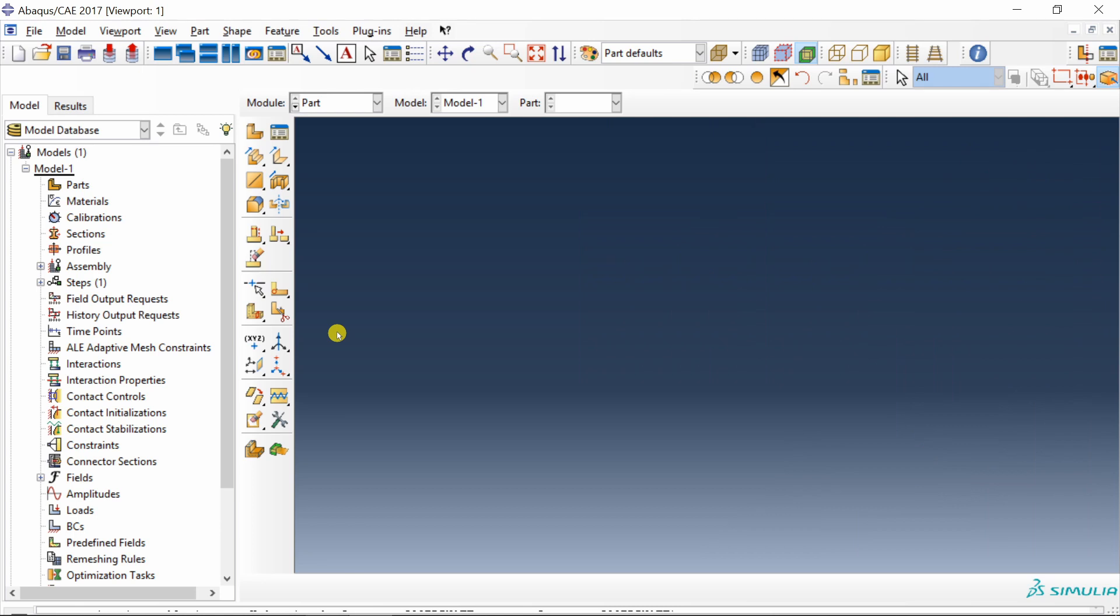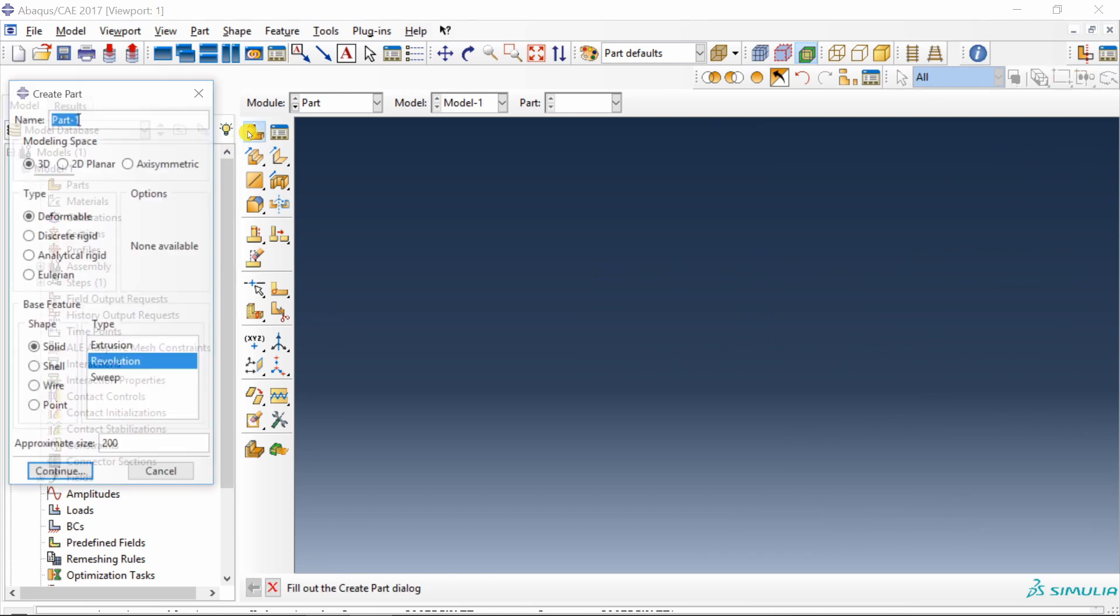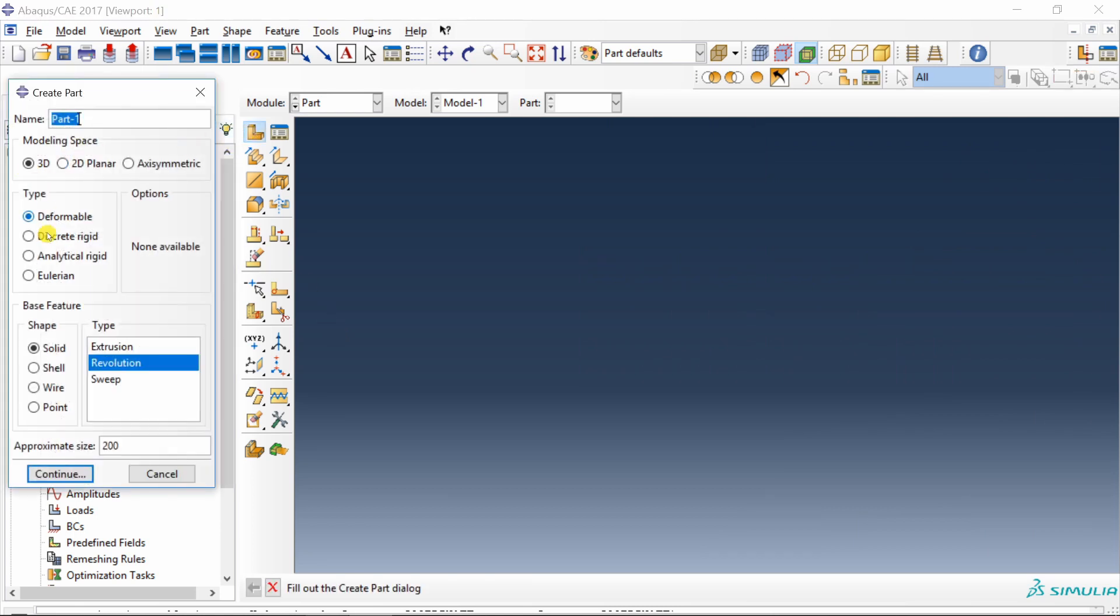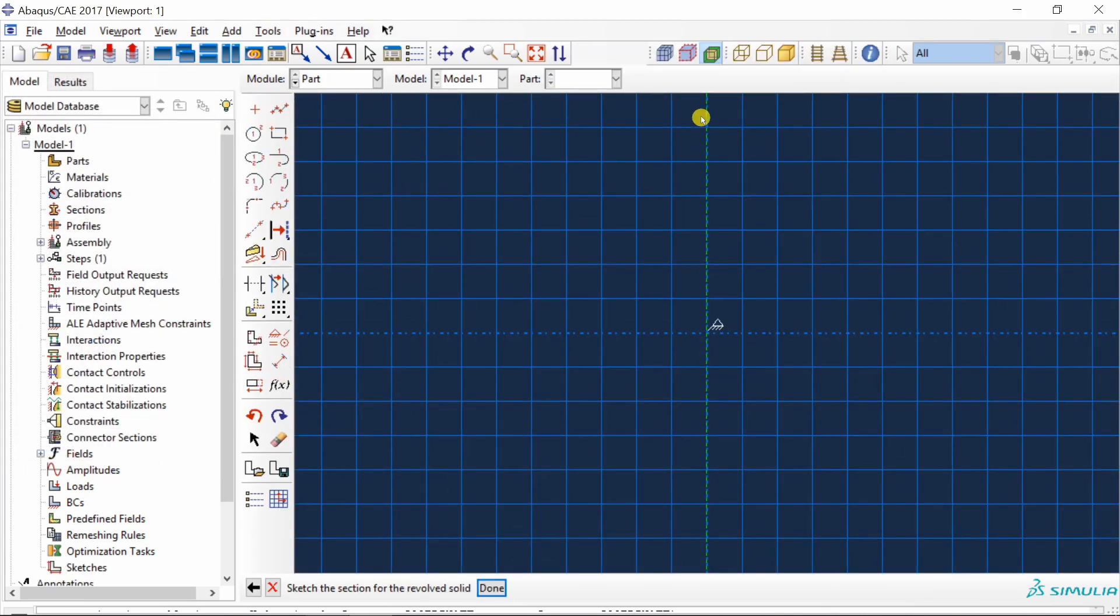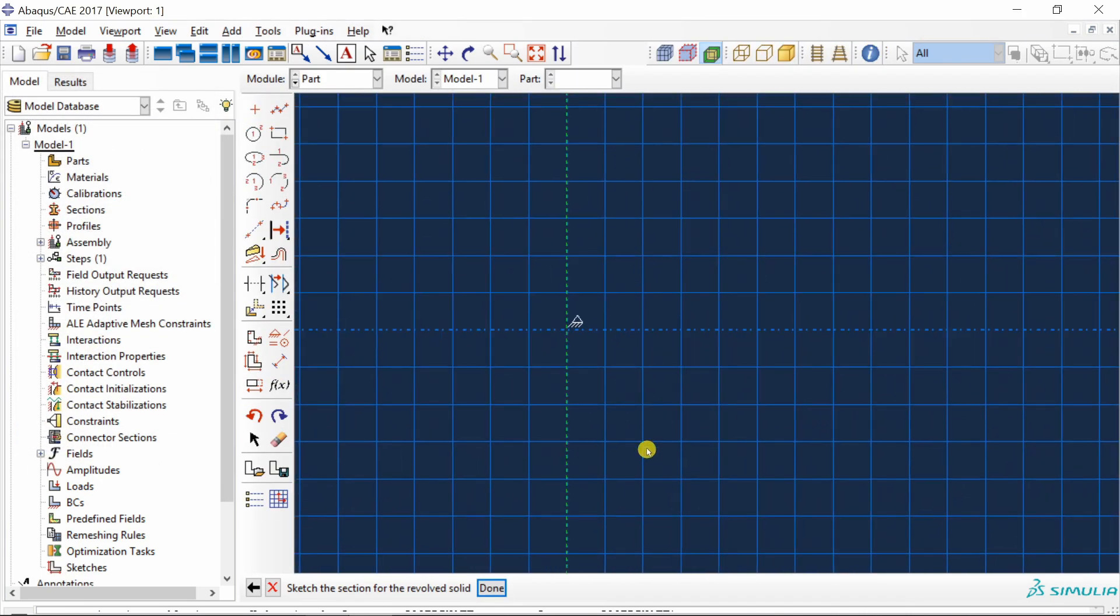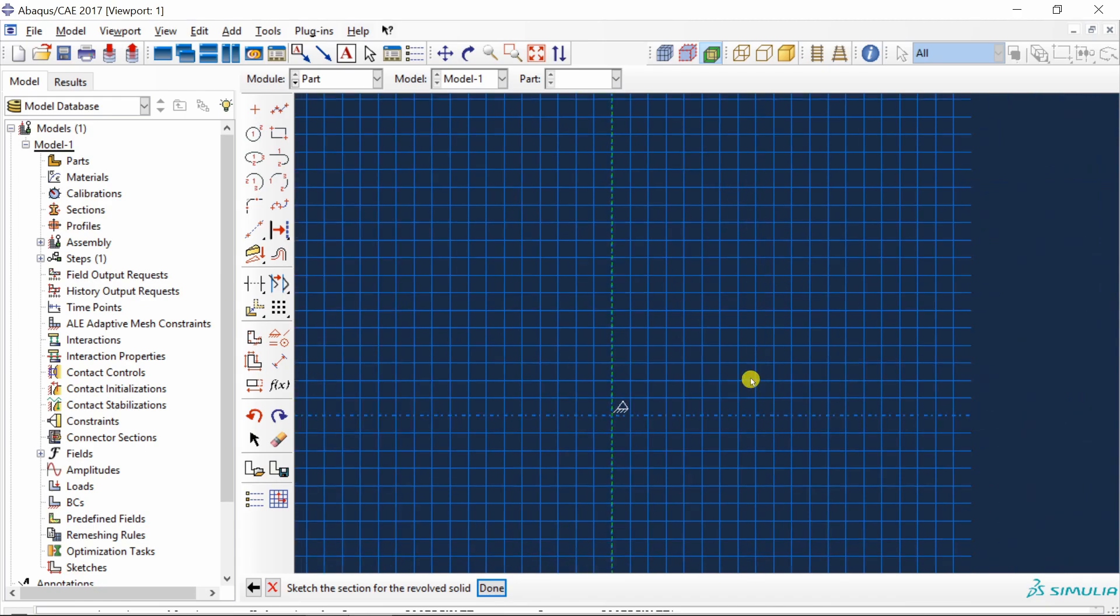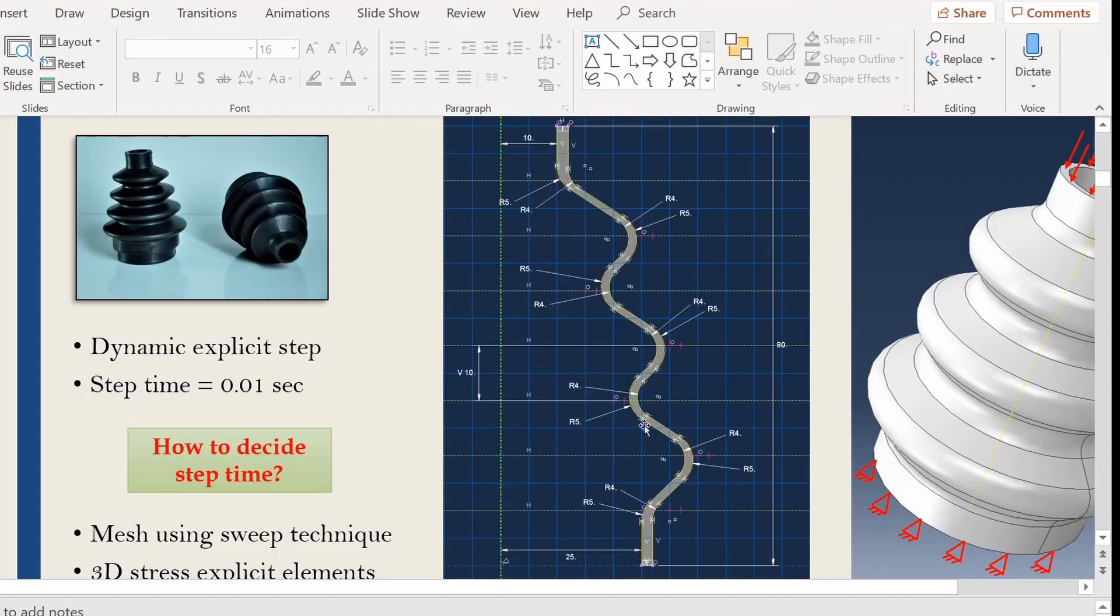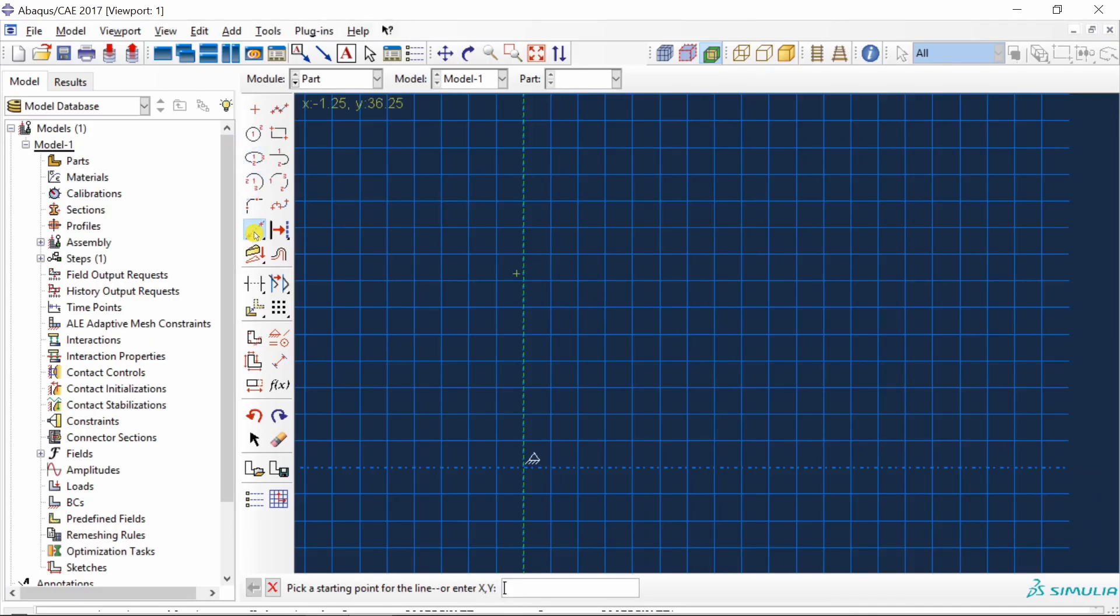Okay, let's start with Abaqus CAE. First, set up your working directory. And then let's start with the part. It should be 3D, shape solid and type revolution. Now this is the axis of revolution. So you have to draw the sketch somewhere over here. As you can see, this is pretty complicated geometry. So first, I am going to create some points and these construction lines. Let's start with construction lines first.